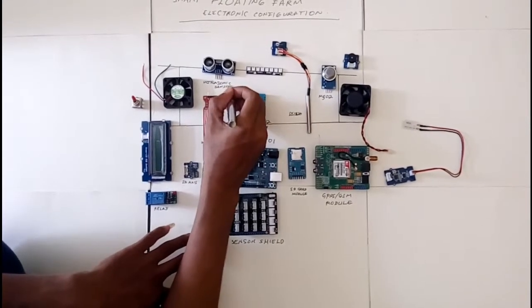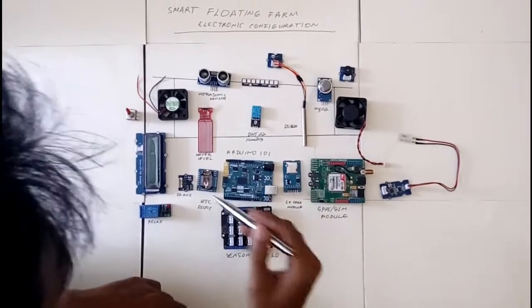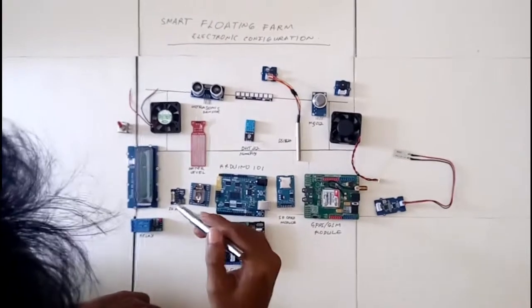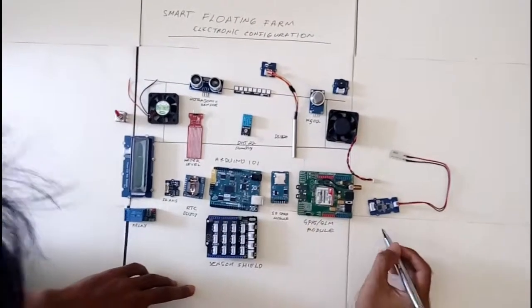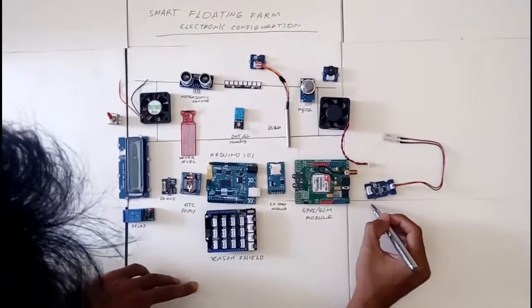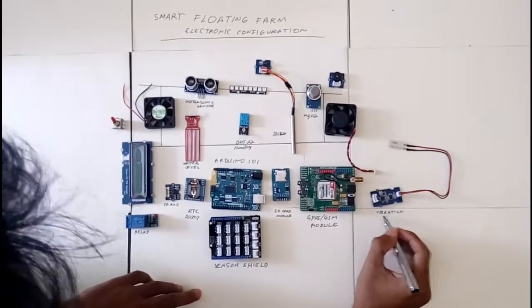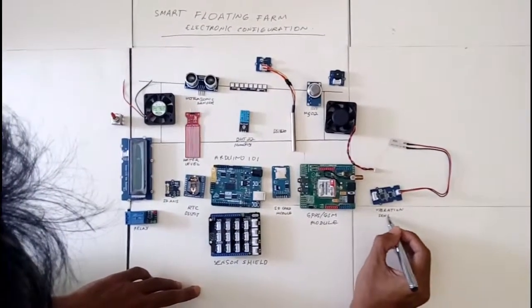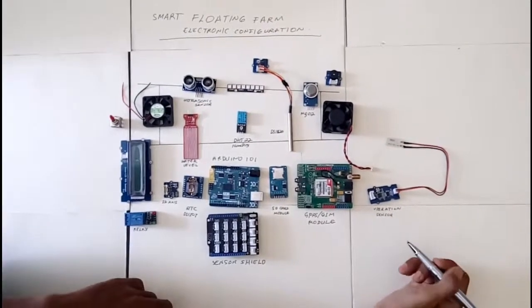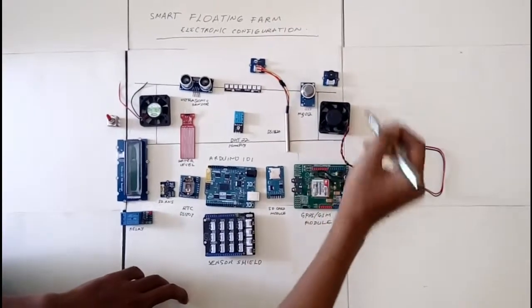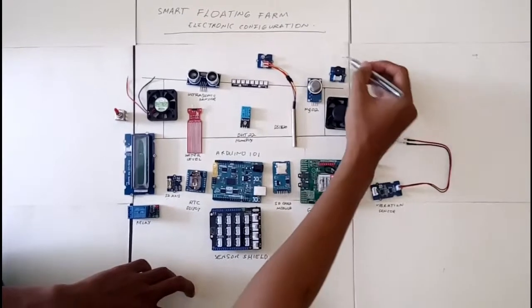We also have a vibration sensor to know if there is vibration inside the smart floating farm, maybe because of crashing by a ship. We also have a buzzer that will activate if there is a parameter above the threshold.